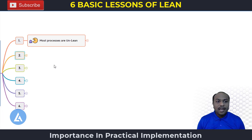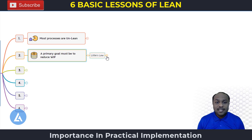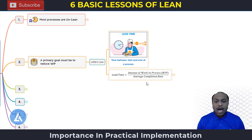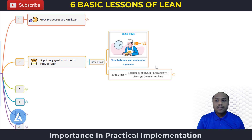The second lean lesson is: the primary goal must be to reduce work in process. The basis for this statement is Little's Law, which says: lead time equals the amount of work in process divided by the average completion rate. Lead time is the time between the start and end of a process. Since the ultimate goal of lean is to speed up processes — that means reduce lead time — we need to work on two entities.